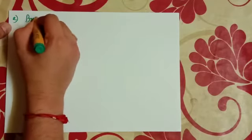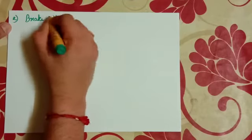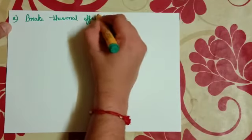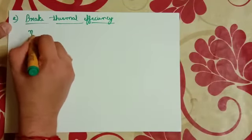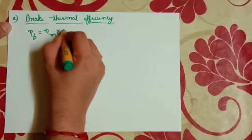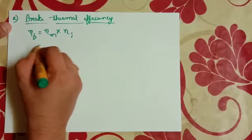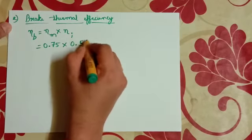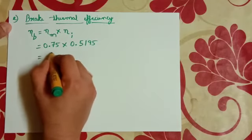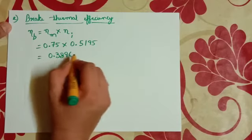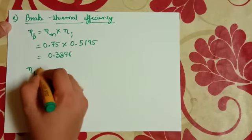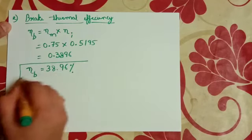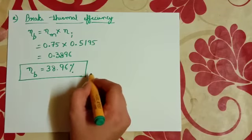Then brake thermal efficiency, eta B is equal to eta M into eta I. That is equal to 0.75 into 0.5195, equals 0.3896. Eta B is equal to 38.96%. This is brake thermal efficiency.